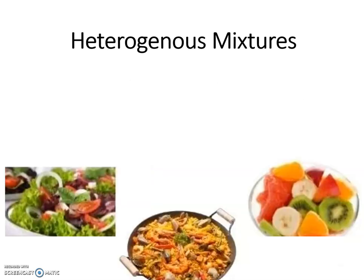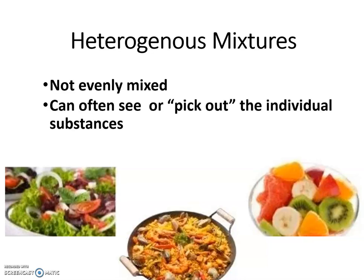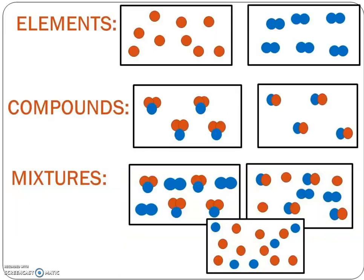Heterogeneous is where you can see the different parts. It's not evenly mixed. So salads, chili, pizza, the ice cream that we talked about, where you can see the different parts or you could pick them out. Those are all examples of heterogeneous mixtures. Rocks like granite would be a heterogeneous mixture. But some rocks, let's say like limestone, would be a homogeneous mixture. And so we just see how the properties are different between them.